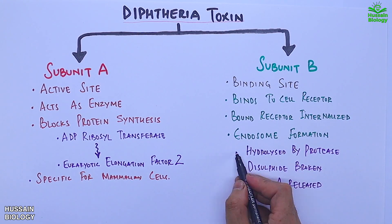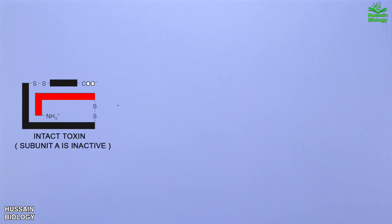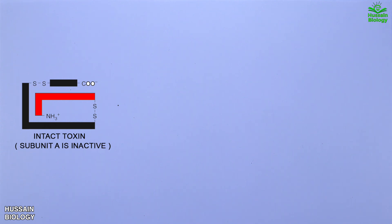Now let's look at the molecular structure of diphtheria toxin. Here in this diagram we have the intact toxin — it is a single polypeptide molecule with two different fragments shown in different colors. This intact toxin is non-toxic because the active site that shows enzymatic activity is masked.